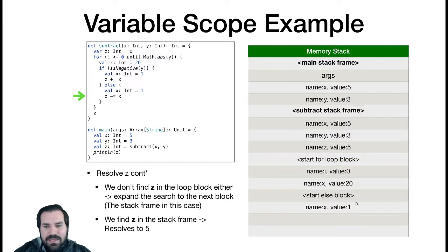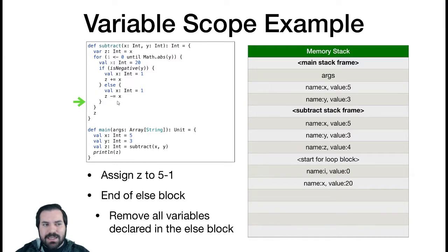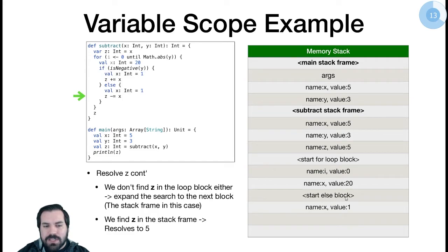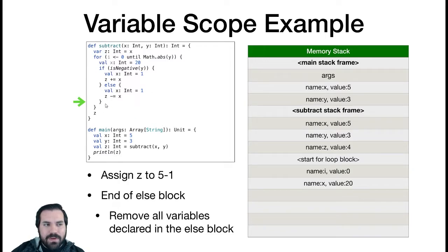We resolved z and x — z is 5, x is 1. We compute z minus x: 5 minus 1 equals 4. So z gets updated to 4. When we reach the end of the else block, everything created in that block is destroyed — so that x with value 1 is gone. Now the x with value 20 from the loop block is the x in scope again. If we typed x right after the else block ends, it would resolve to 20.